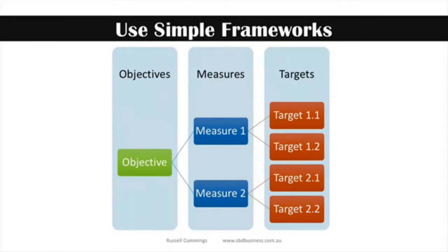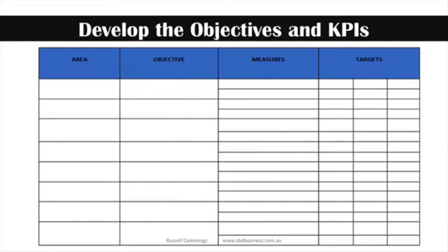We've given you a worksheet, so download it — it's really simple. The area is the area you'd like to work in, let's say health. The objective is improve my fitness. Then we went through some measures and targets. I've given you space to put a couple in, but you can expand on this model as much as you like.